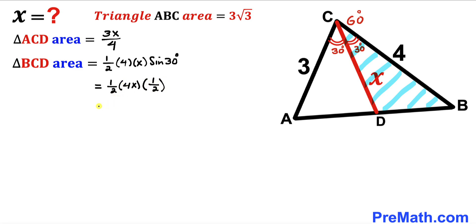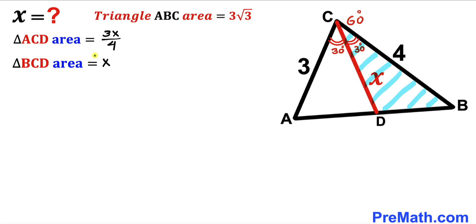Simplifying the right hand side gives us X. So the area of triangle BCD turns out to be X.